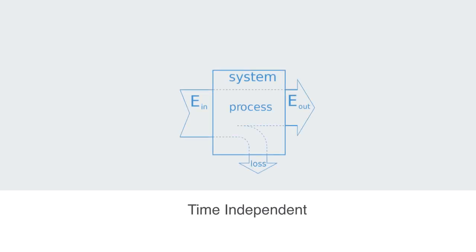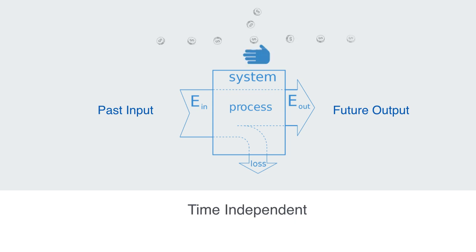If we were to draw a model of a linear system, it would look something like this. There would be an input to the system, some process, and an output. The input and the output to the system are independent from each other. The value that we input to the system now is not in any way affected by the previous output. There are of course phenomena where this holds true, such as the flipping of a coin — the value I get from flipping a coin now will not be dependent in any way on the value I got the last time that I flipped it.